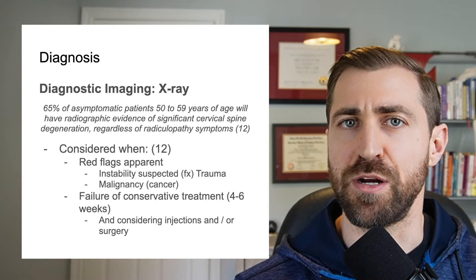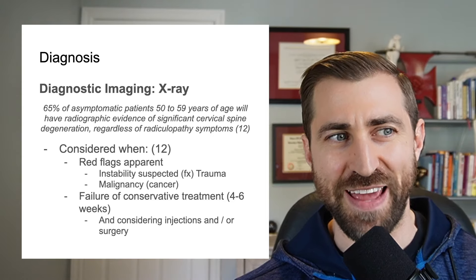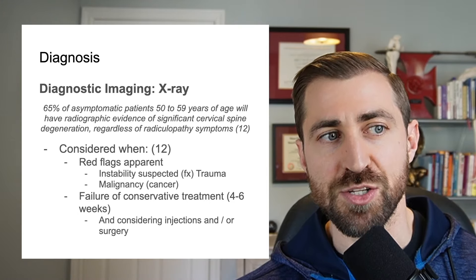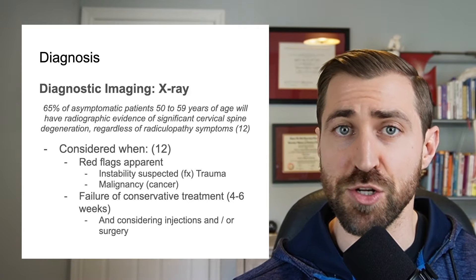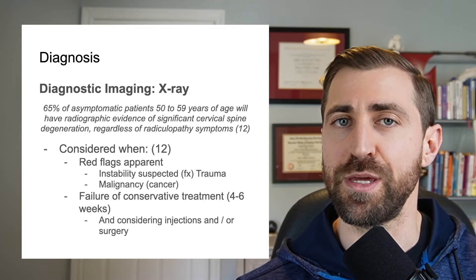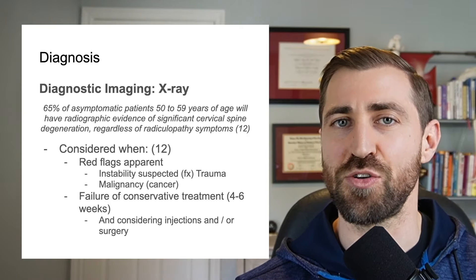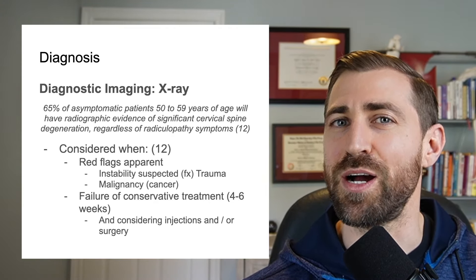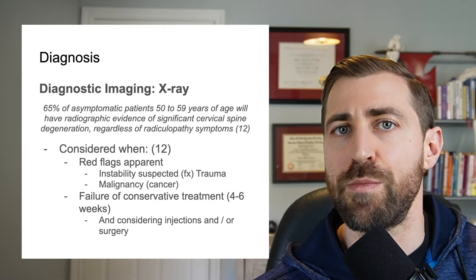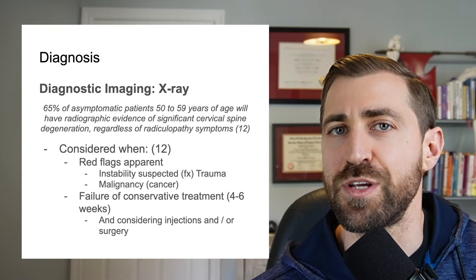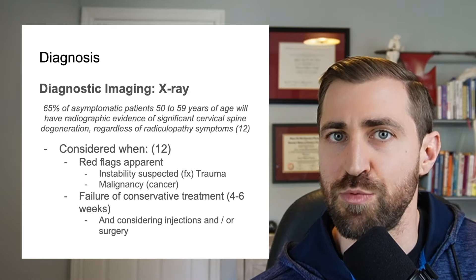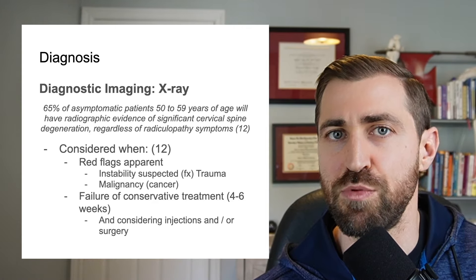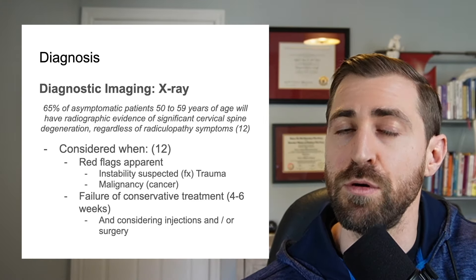Regarding x-rays: 65% of asymptomatic patients aged 50 to 59 will have radiographic evidence of significant cervical spine degeneration regardless of radiculopathy symptoms. If we rely on x-rays to diagnose cervical radiculopathy, a lot of these findings will be asymptomatic. Also, x-rays don't pick up soft tissue injuries like nerves. However, x-rays can show the size of the intervertebral foramen — if there is very little space due to spurring or bony hypertrophy of the uncovertebral joints, you can see decreased space and help rule in a given level based on the clinical picture.